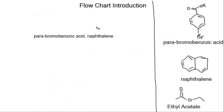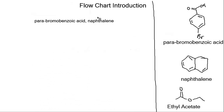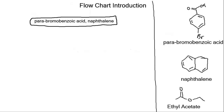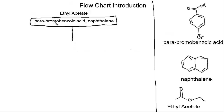For the flowchart, let's start by saying that we've got our parabromobenzoic acid and naphthalene. In flowcharts we often have boxes to say what compound is where. We'll start with our first box, and we also need to say that these are dissolved in the solvent ethyl acetate. So our flowchart begins with these two compounds dissolved in ethyl acetate.